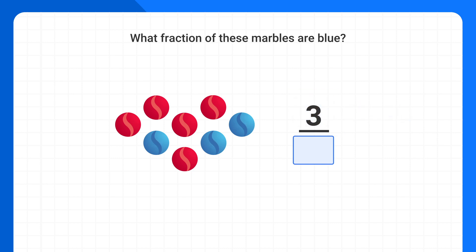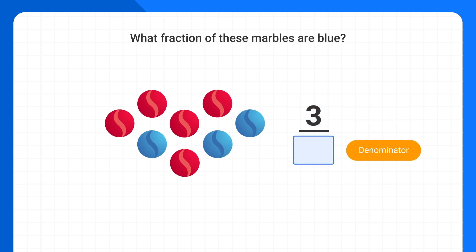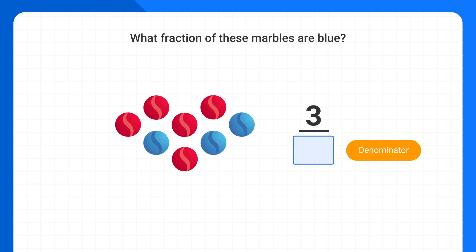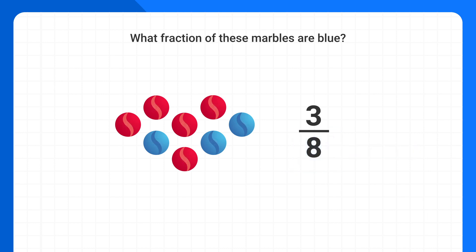Next, the denominator represents the total number of pieces in the whole, which here means the total number of marbles in our bag. We can count that there's one, two, three, four, five, six, seven, eight marbles in total, so the denominator is eight. We can now say that three-eighths of the marbles are blue.